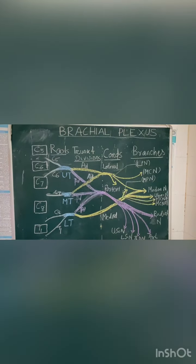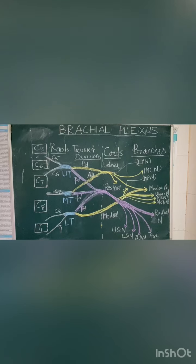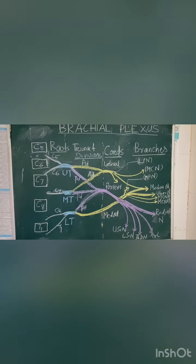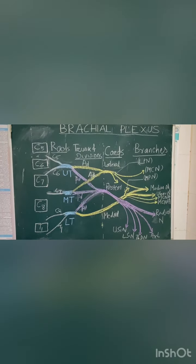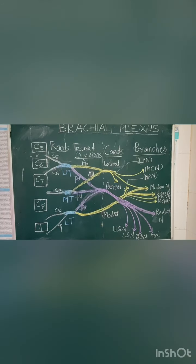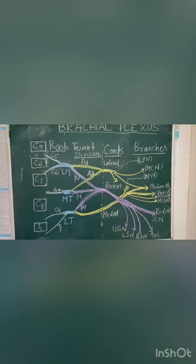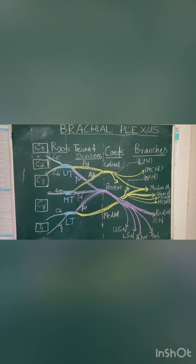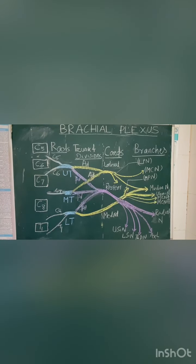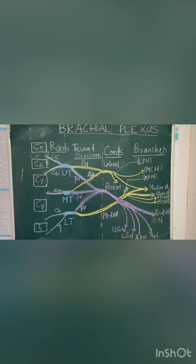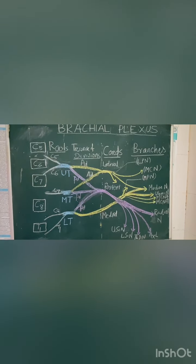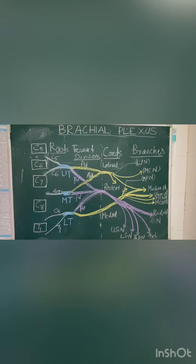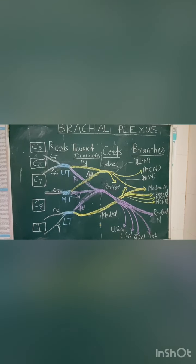Five branches are given by the medial cord: the medial pectoral nerve (MPN), the medial root of the median nerve which unites with the lateral root to form the median nerve, the ulnar nerve, the medial cutaneous nerve of the arm, and the medial cutaneous nerve of the forearm.